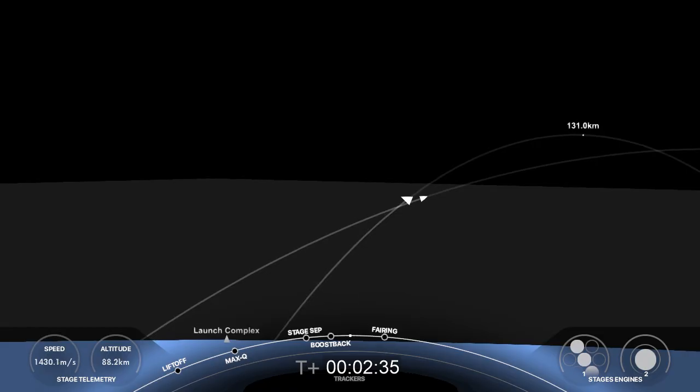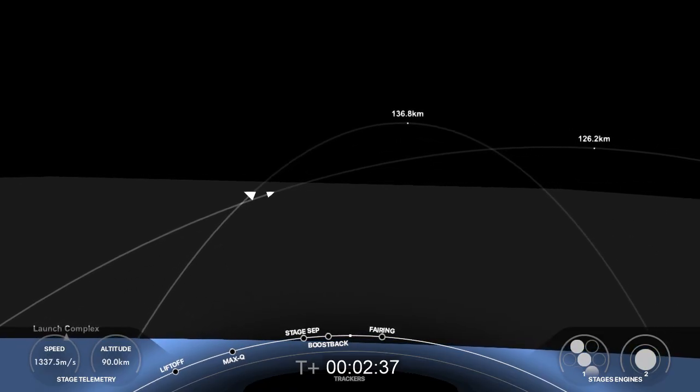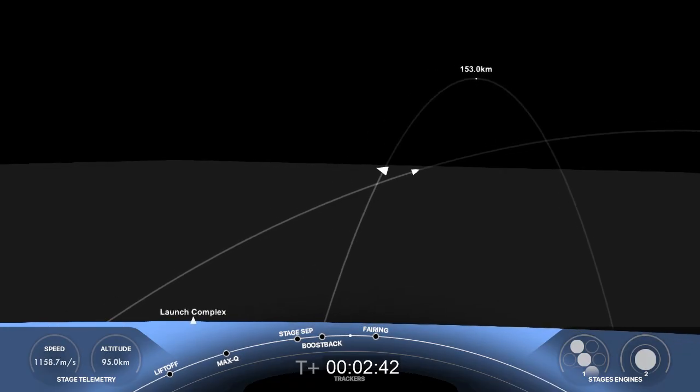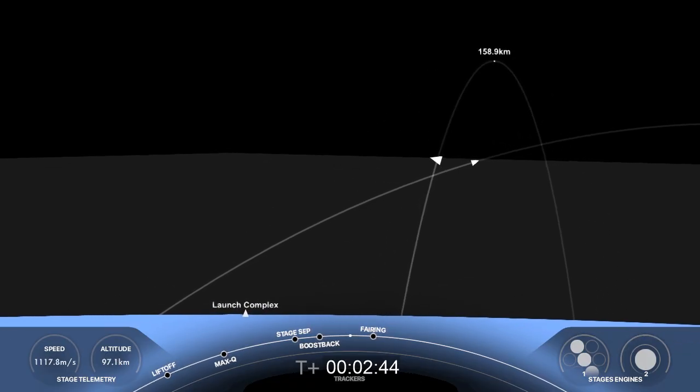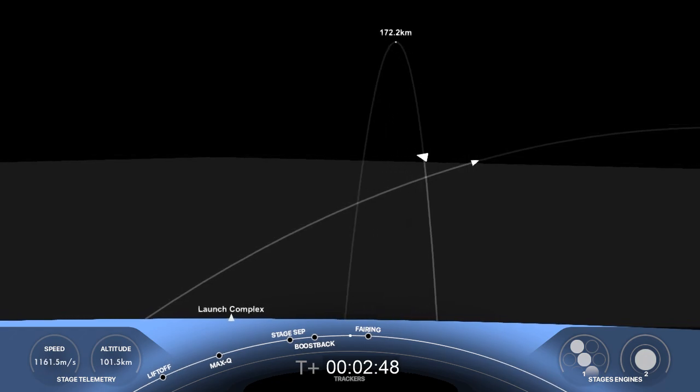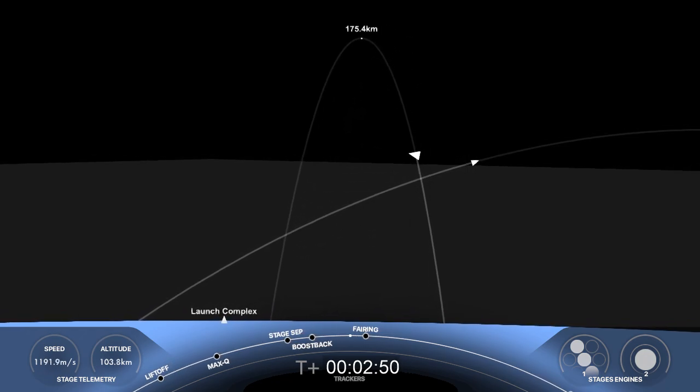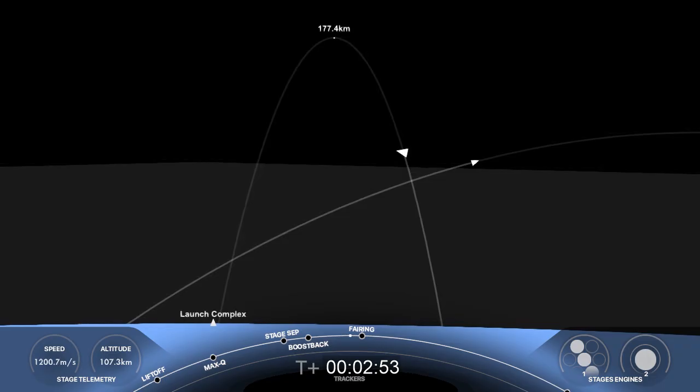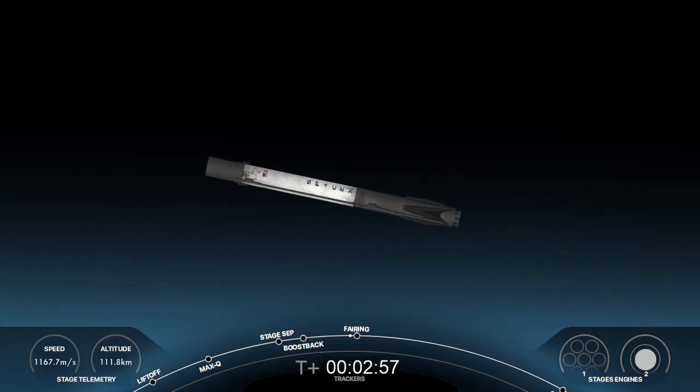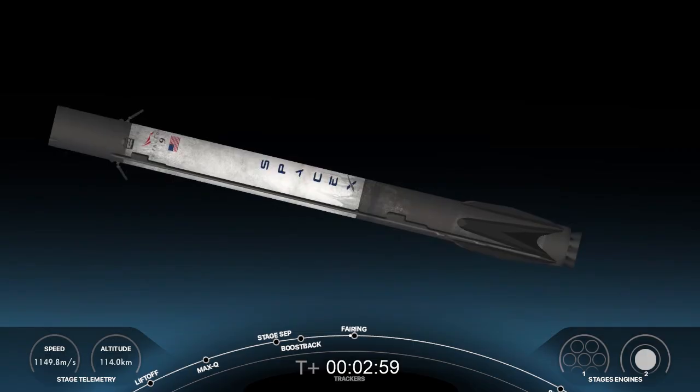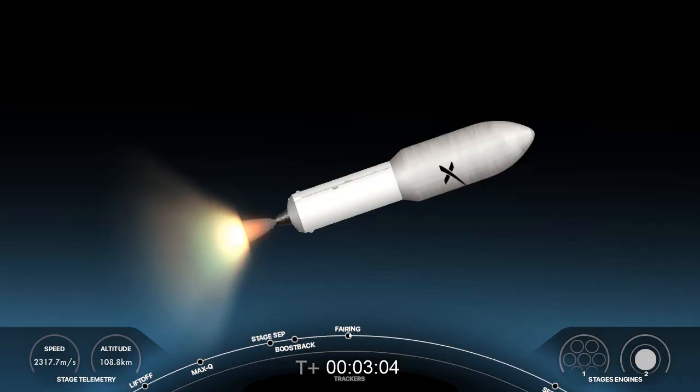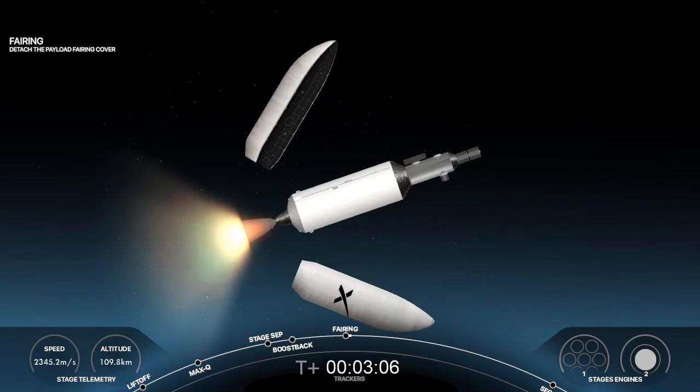Coming up next will be the fairing deployment on the second stage. Both halves of the fairing flying today are flight proven, with one flying for its 14th time and the other for its second time. They'll be picked up today by our west coast fairing recovery vessel. Fairing separation confirmed.